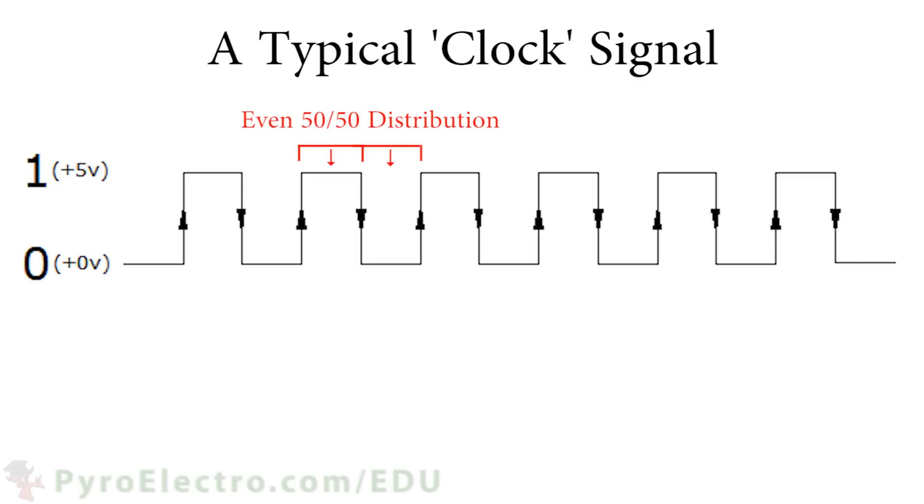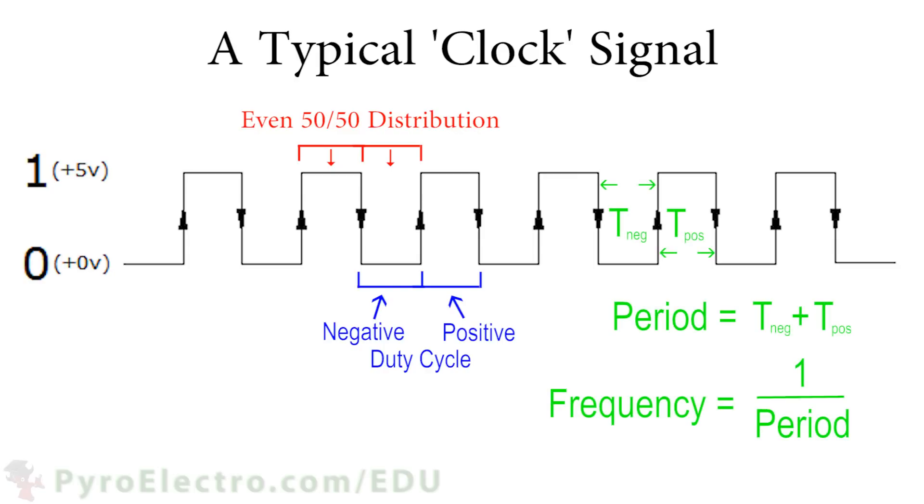A good clock signal stays at logic 0 50% of the time and at logic 1 50% of the time. This is what is known as a clock signal with the 50% duty cycle. The attributes that you need to know about a digital clock signal are that the logic 0 time, negative duty cycle,